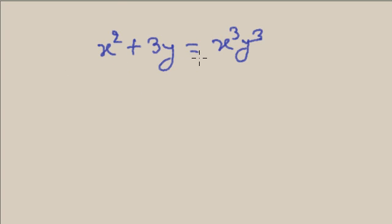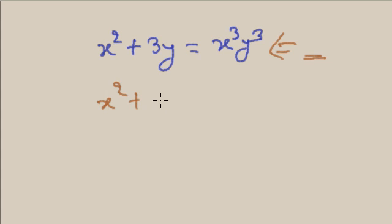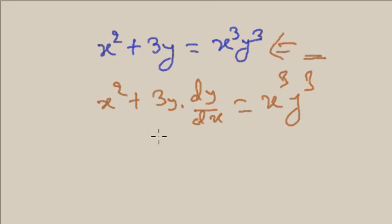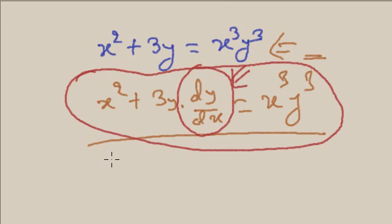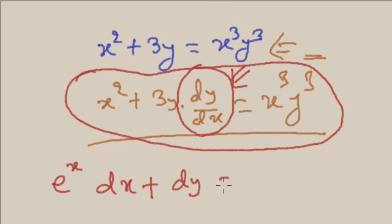Here, this is one equation of two variables, but this is not a differential equation — because in this there is no derivative. But if the equation is like x² plus 3y times dy/dx equals x³y³, this is a differential equation, because one derivative is coming into it.